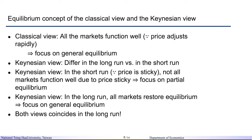In the short run, because the price is sticky, we allow not all markets to attain equilibrium. Some markets may not function well due to price stickiness. So under the short run, we focus on partial equilibrium for the Keynesian type of analysis. However, in the long run, all markets will restore equilibrium — in other words, all markets will attain equilibrium — so in the long run, we focus on general equilibrium.